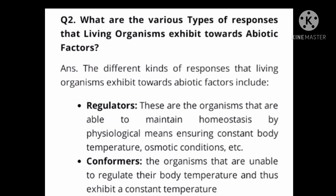Next type is conformers. Conformers are the organisms that are unable to regulate their body temperature, and thus don't exhibit a constant temperature. Meaning, they cannot keep their temperature constant — as the external temperature changes, they have to change accordingly. So these are called conformers.